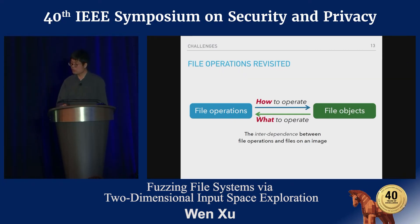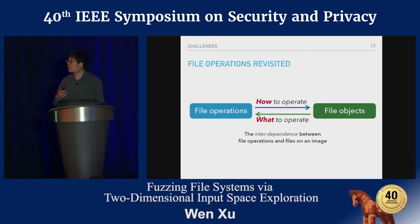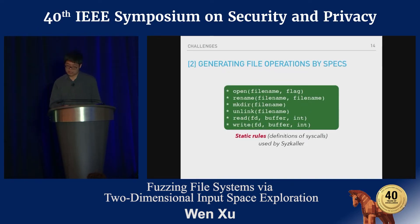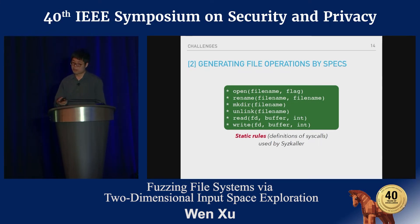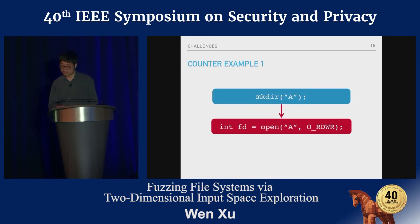Next, we talk about fuzzing file operations. File operations are a list of system calls to be invoked on some file objects in the image, so there is interdependence between these two sides. Existing file system fuzzers like syzkaller simply run based on static rules that define the system calls, generating arguments with valid types and running them. But in the context of file system fuzzing, this is not effective.